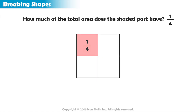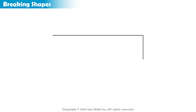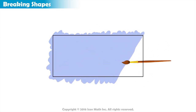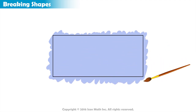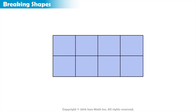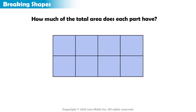Let us now look at another shape. This time it is a rectangle. Again, the entire space inside the rectangle is its total area. If we divide the rectangle into eight equal parts like this, then how much of the total area does each part have?